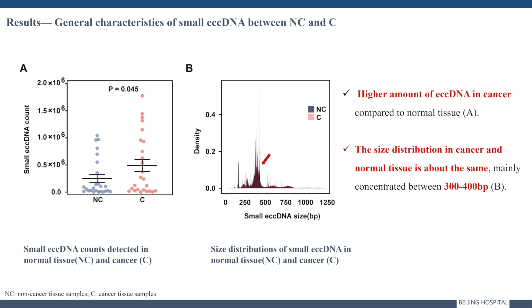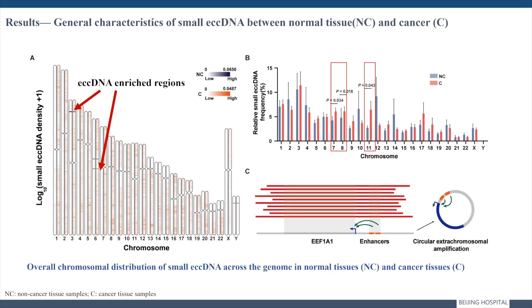We further compared the amount of ECC-DNAs in tissue samples and found that tumor tissues have more ECC-DNAs than normal tissue samples. However, the size is similar, mainly distributed between 300 to 400 base pairs. The chromosome distribution of ECC-DNA shows some high-frequency positions on chromosomes 3 and 6.